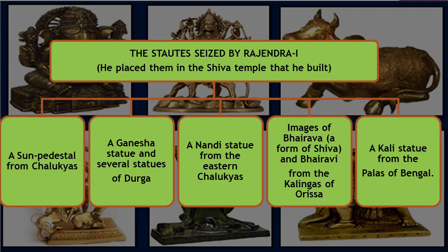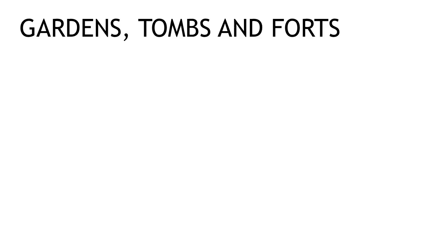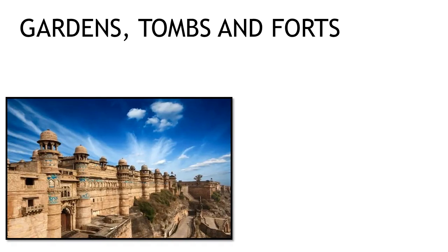Some statues seized and kept by Rajendra I in his Shiva temple included: a sun pedestal taken from the Chalukyas, a Ganesha statue and several statues of Durga, a Nandi statue taken from the Eastern Chalukyas, images of Bhairav and Bhairavi taken from the Kalinga rulers of Odisha, and a Kali statue from the palace of Bengal.